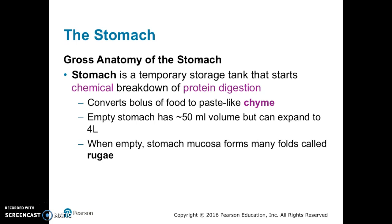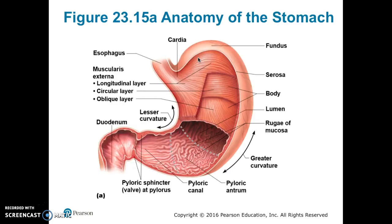The stomach is a temporary storage tank that starts the chemical breakdown of protein digestion. It converts the bolus of food into a paste-like chyme. The empty stomach is about 50 milliliters in volume but can expand to four liters. When empty, the stomach mucosa has many folds called rugae. The major regions include the cardia, which surrounds the cardiac orifice; the fundus, the dome-shaped region beneath the diaphragm; the body, the mid portion; and the pyloric part, which includes the antrum, the pyloric canal, and terminates at the pylorus.